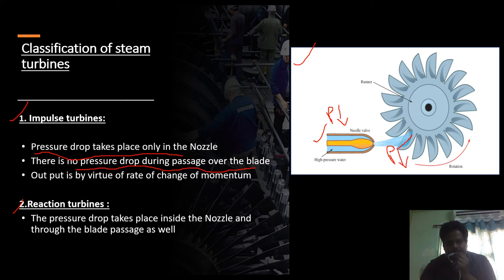In case of a reaction turbine, pressure drop takes place inside the nozzle as well as through the blade passages. This type of turbine is called a reaction turbine. To summarize: in an impulse turbine, pressure drop takes place only in the nozzle; in a reaction turbine, pressure drop takes place in the nozzle as well as through the passage of the blade.